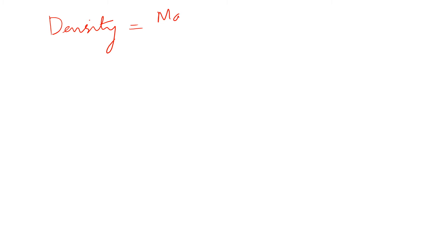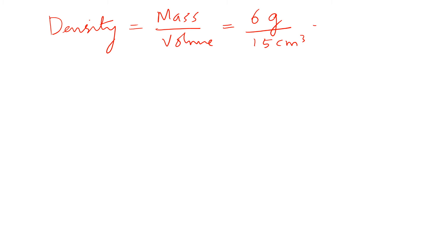So let's write the equation we have to calculate density. Density is equal to mass divided by volume. In this case the mass is given as 6 grams and the volume is given as 15 centimeter cubed, which means the density of the material will be 0.4 grams per centimeter cubed.